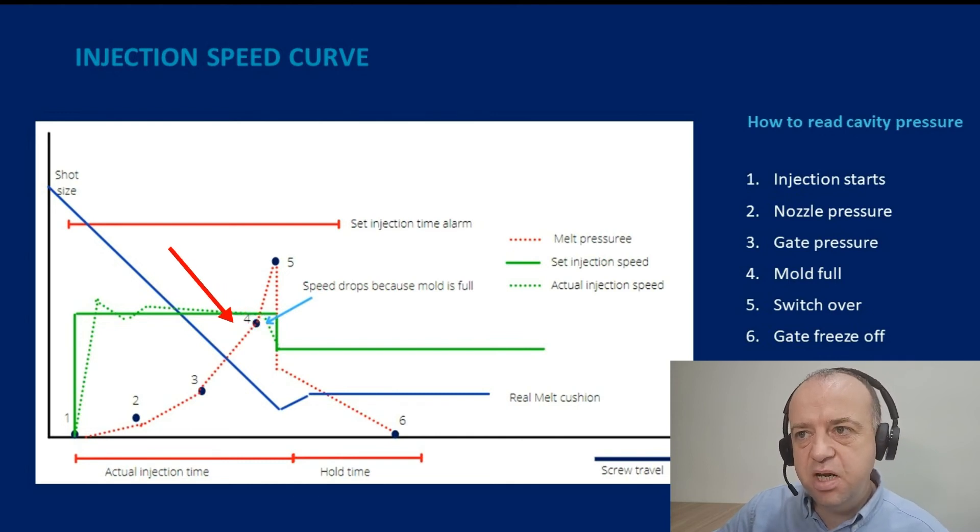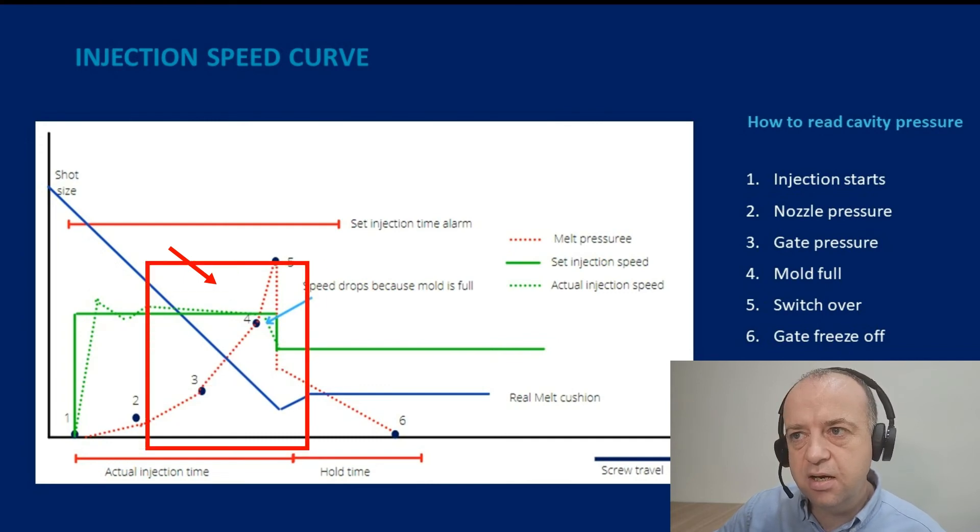As the mold fills, more resistance, the speed at which the plastic enters the cavity will reduce. So again, if you zoom in on that area, really take a close look in at that area, you may see as the part is full or almost full, you'll see a reduction in the speed of the curve, the actual injection moving screw moving forward. You may see that speed reduce.